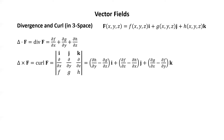Keep in mind this is not a real determinant — it's just a mnemonic device. Going down the main diagonal: i, partial with respect to y, and h. We think of the middle row operating on the bottom row. So the partial of h with respect to y times i, and going back the other direction we get the partial of g with respect to z times i. Doing that for all three components, curl F equals (∂h/∂y − ∂g/∂z)i + (∂f/∂z − ∂h/∂x)j + (∂g/∂x − ∂f/∂y)k.